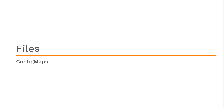Next, moving on to files. In the next two slides, we'll look at creating a ConfigMap using a single file. First, we'll download a sample file from online. Then we'll create the ConfigMap using that file. After that, we'll create the pod spec using that ConfigMap. And finally, we'll verify that the configuration was correctly applied.